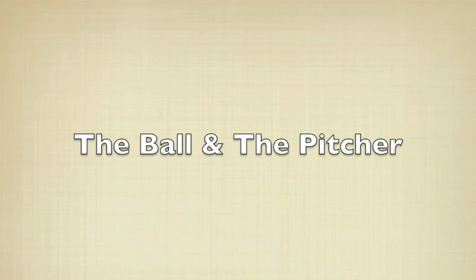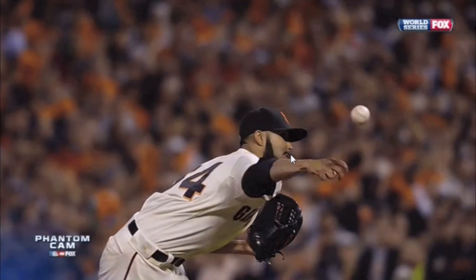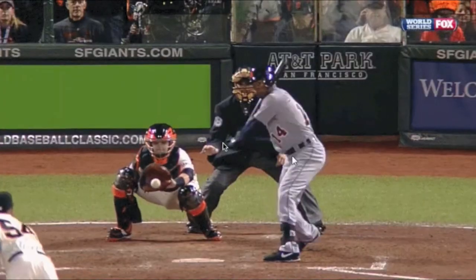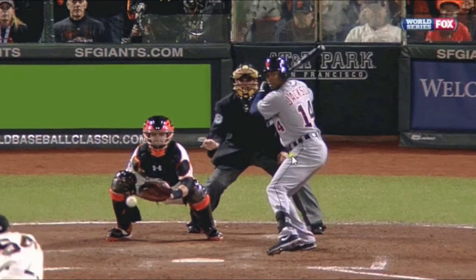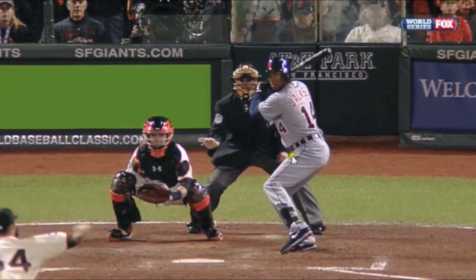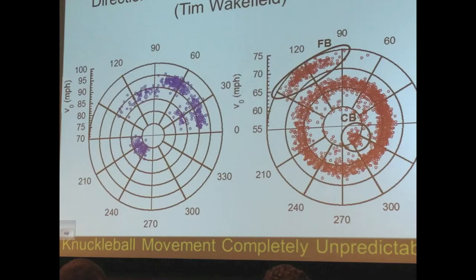Baseball pitchers aren't simply throwing a baseball. There is a lot of skill and technique that goes behind it. When mastered, the pitchers can make the ball curve and completely confuse the batter, sometimes making it near impossible to hit the ball. Pitcher Mariano Rivera is considered one of the best in this regard. He is capable of continually placing his pitches near the batter, making it impossible for the batter to hit the sweet spot.